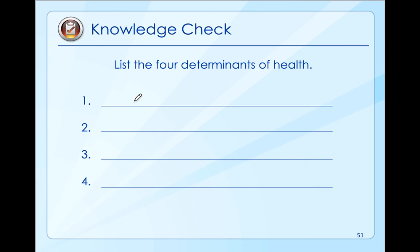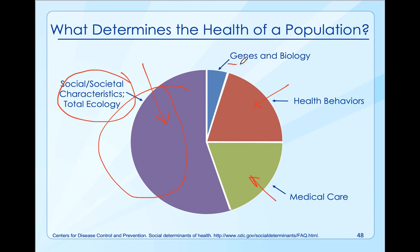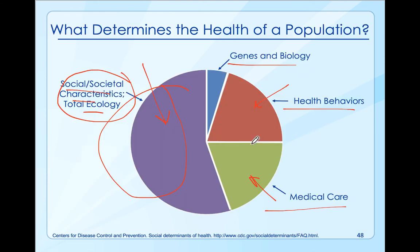Let's talk about the four determinants of health. Can you list all four of them? Genes and biology, your health behaviors, medical care, and your social and ecological characteristics. Which one influences our health the most? Societal characteristics - where you live, work, and play. What impacts us the least? Your genes and biology.